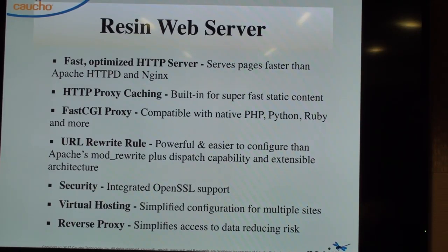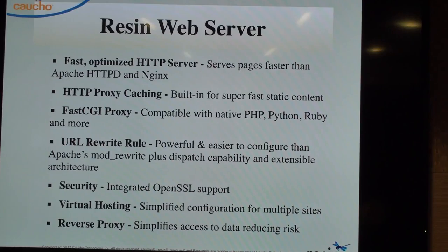Our web server — last time we benchmarked it against Nginx and Apache in terms of raw performance and throughput. It does FastCGI — it's a FastCGI proxy compatible with native PHP, Python, Ruby, and more. A lot of people use the URL rewrite rules; we were surprised to see upwards of 100 to 200 rewrite rules in some applications. People report they're not seeing any performance impacts from that, which is good to hear.